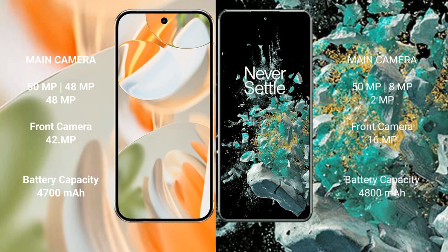Google Pixel 9 Pro features a rear triple camera setup: 50MP plus 48MP plus 48MP, and a 42MP front camera. OnePlus 10T features a rear triple camera setup: 50MP plus 8MP plus 2MP, and a 16MP front camera.